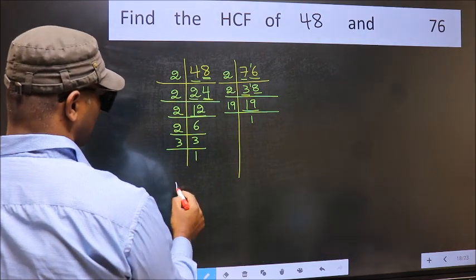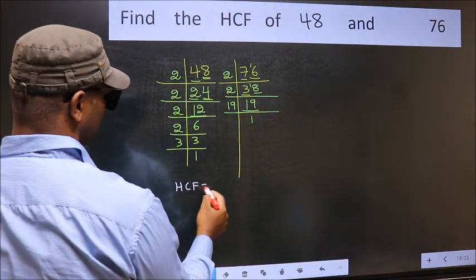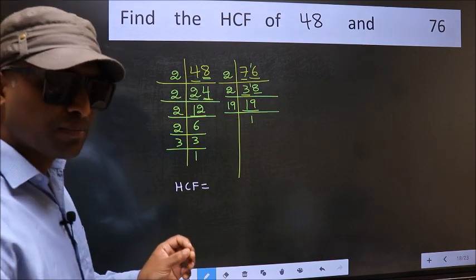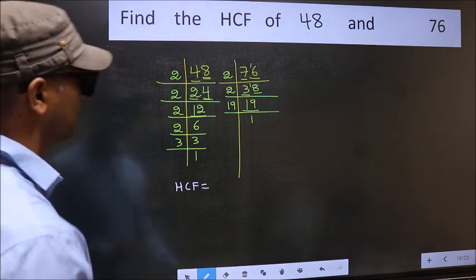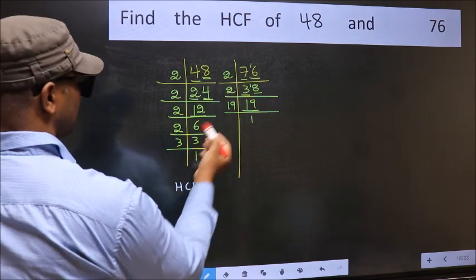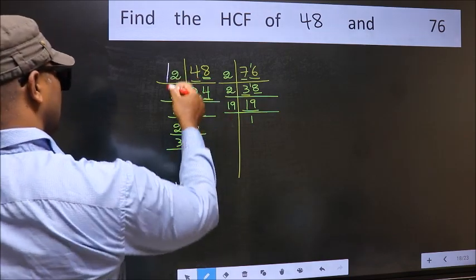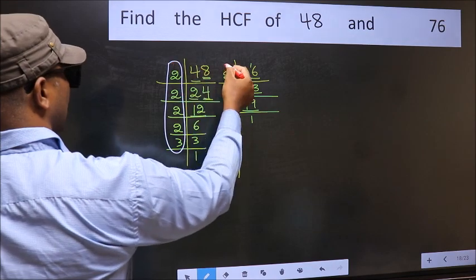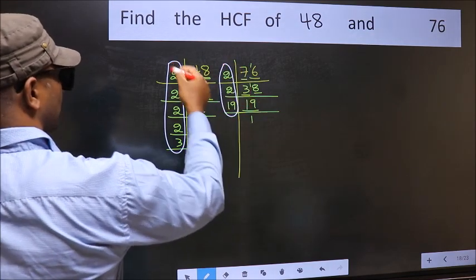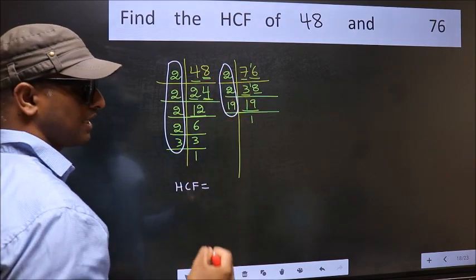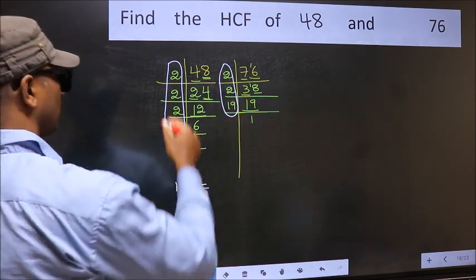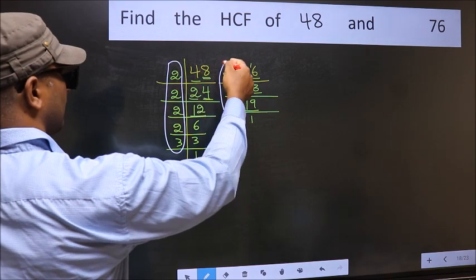Therefore our HCF is, HCF is the product of the numbers which should be present in these 2 places. That is here and also here. Here and here. So now let us find the numbers which should be present here and here.